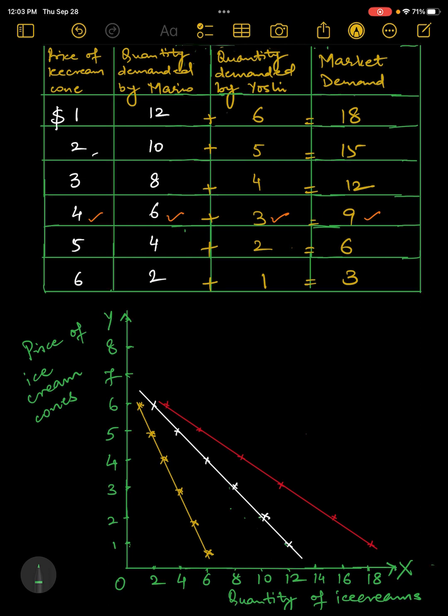The following graph shows the demand curves that correspond to these demand schedules. So notice here that we sum the individual demand curves horizontally to obtain the market demand curve. To find the total quantity demanded at any price, so at the price of $4, if I want to check this point, this is 9, which is how much? 6 ice creams demanded by Mario and 3 ice creams demanded by Yoshi. So when I added these two, I will get 9 here.